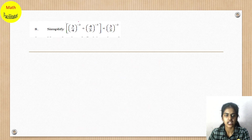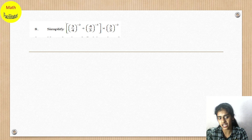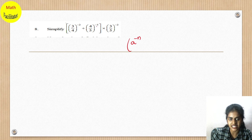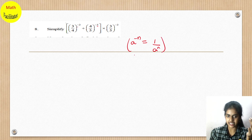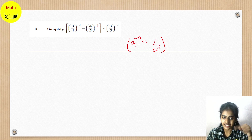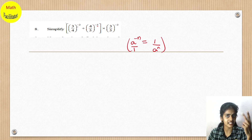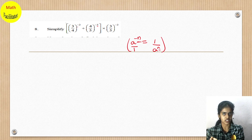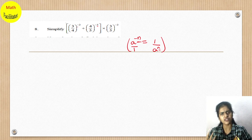Next: simplify (3/4)^(-2) ÷ (4/5)^(-3) × (3/5)^(-2). All the powers are negative. Using a^(-n) = 1/a^n: when you reciprocal a fraction, the negative power becomes positive. Let's reciprocal all the fractions so that all the negative powers become positive.